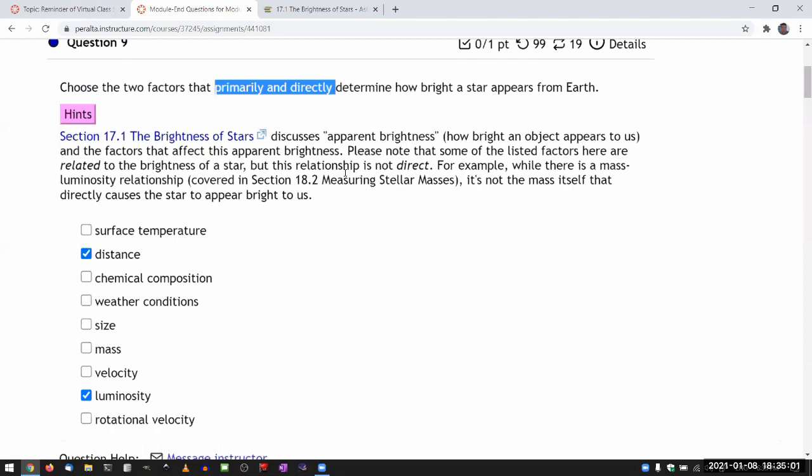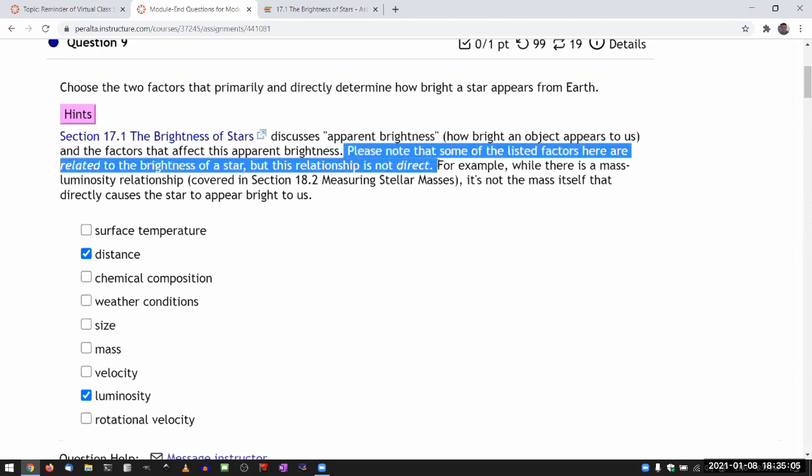And in the hint, I put this in because some of these factors are correlated with how bright a star appears, like the surface temperature. If the surface temperature is high, that is correlated with luminosity being high. So a star with a high surface temperature, all else being equal, will probably appear brighter.